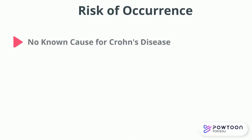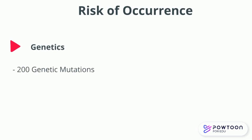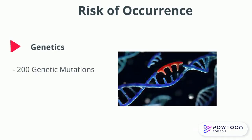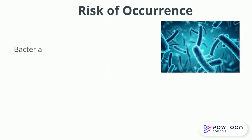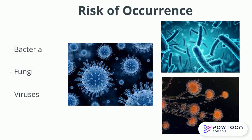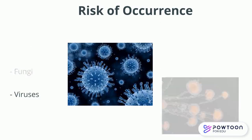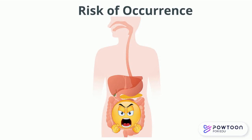Currently, there is no known cause of Crohn's disease. However, there are various factors that increase the risk of occurrence. Genetics is one of them, with over 200 genetic mutations linked. As a result, inflammatory bowel disease often runs in families. Another risk factor is changes in the gut microbiome, a community of microorganisms including bacteria, fungi, and viruses. Changes here can trigger an immune response that causes abnormal inflammation, as the white blood cells swell the area attempting to return the microbiome to its original state.